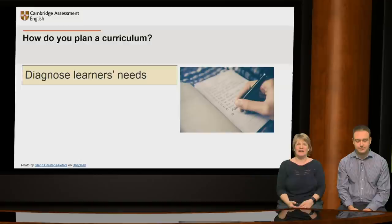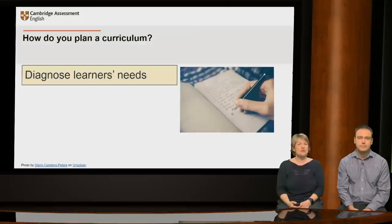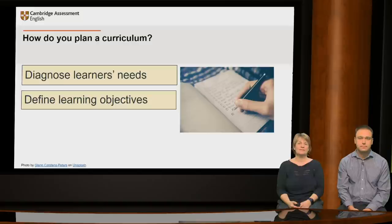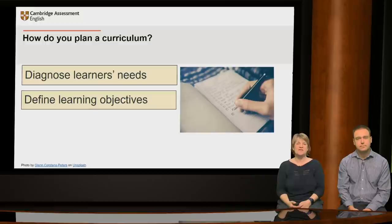What your learners are expecting — or are expected by someone else, an employer, a parent, a Ministry of Education — to be able to do with the language as a result of their course of study, as well as what they already know and have experience of. Next, you use what you've found from this analysis of learner needs to inform the goals for your course and to formulate descriptions of what you expect learners to be able to do by the end of it — in other words, to define your learning objectives.